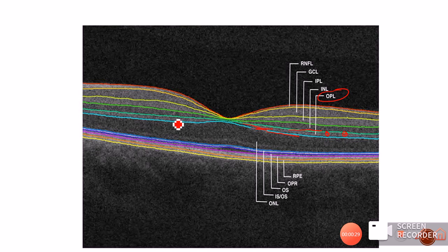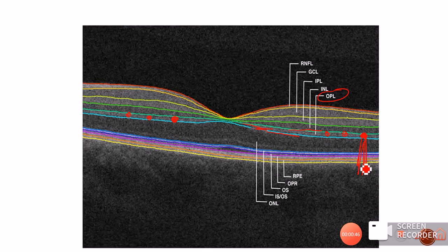Hard exudates appear hyper-reflective on OCT — they look like whitish lesions in the outer plexiform layer. They tend to absorb light, producing a shadowing effect behind them. So behind the hyper-reflective lesions present in the OPL, we see black shadows, and that is what is characteristic of hard exudates on OCT.